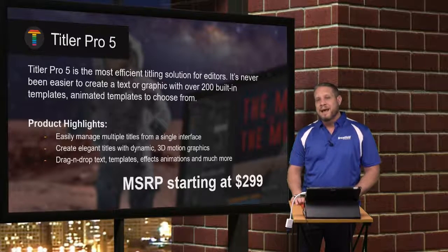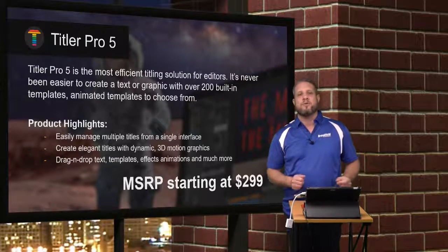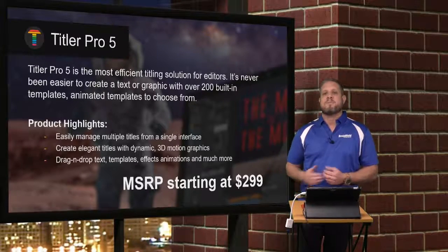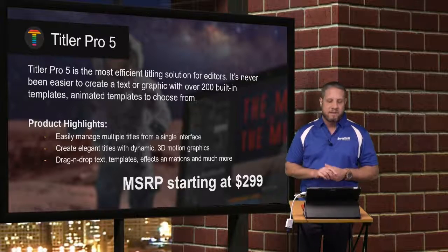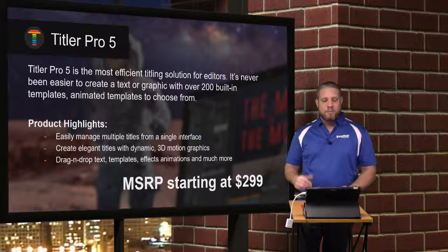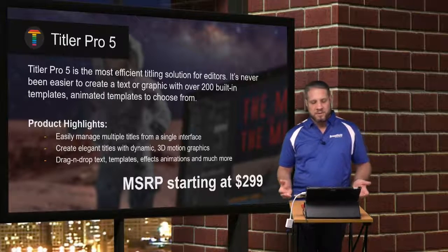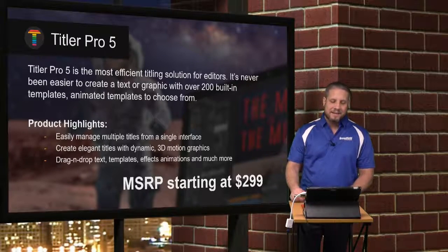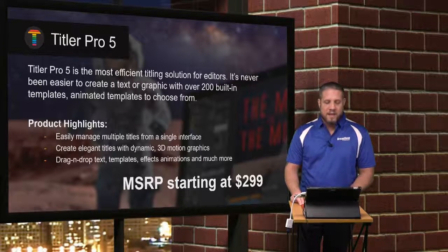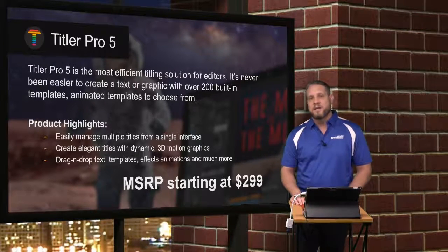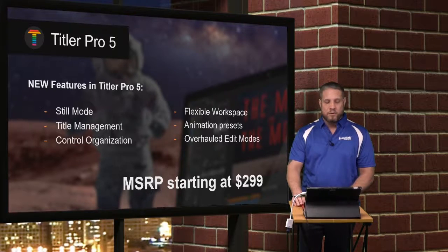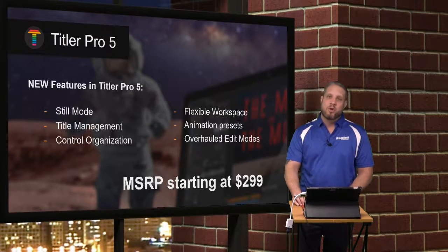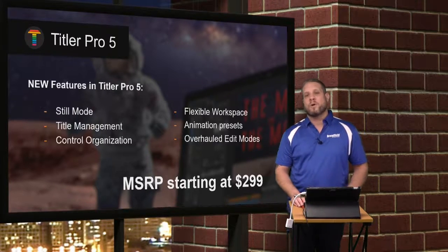Next is Titler Pro 5. Titler has really been the staple of New Blue software. There is a version of Titler Pro included with a lot of the Avid Media Composer software, as well as a bunch of other NLEs in the marketplace today. Titler Pro 5 allows you to easily manage multiple titles from a single interface, create elegant titles with dynamic 3D motion graphics, and drag-and-drop text, templates, effects, animations, and much more. Some of the new features added to Titler Pro 5 include Still Mode, Title Management, Control Organization, Flexible Workspace, Animation Presets, and Overhold Edit Modes.